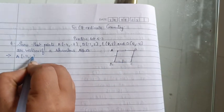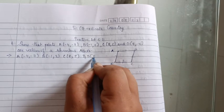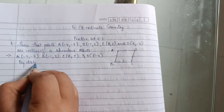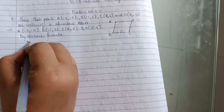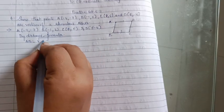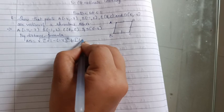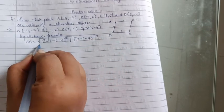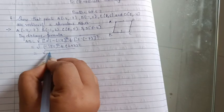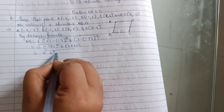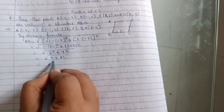A equals (-4, -7), B equals (-1, 2), C equals (8, 5) and D equals (5, -4). By the distance formula, AB equals under root of (-1 minus -4) whole square plus (2 minus -7) whole square. This becomes (-1 + 4) whole square plus (2 + 7) whole square, which is 3 squared plus 9 squared. Square of 3 is 9 and square of 9 is 81. So 81 plus 9 is 90.